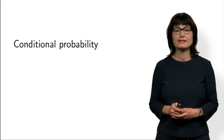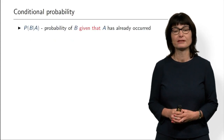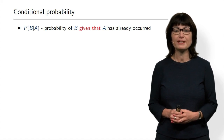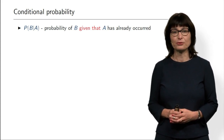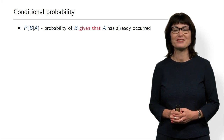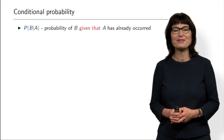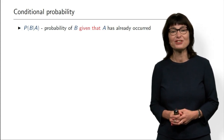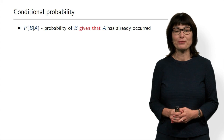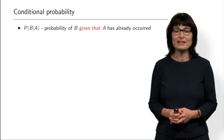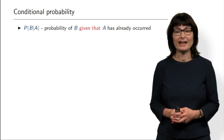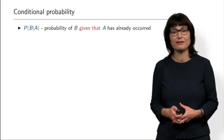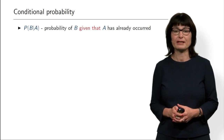So what is the conditional probability? We denote it as written in this slide: probability of B given A. Now B and A are two events. What does it mean when A is written behind the bar? That means B conditioned on A — it is a probability of B given that A already happened. So event A already happened and now, given that, we want to compute the probability that B will happen.